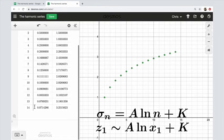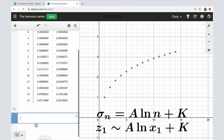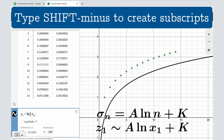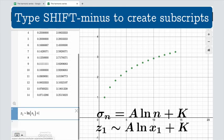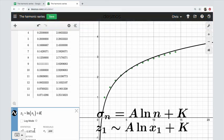We are going to enter into a cell z sub 1 tilde A ln(x sub 1) plus K. And so it's now fit that model as best as it can.